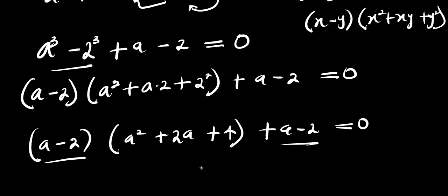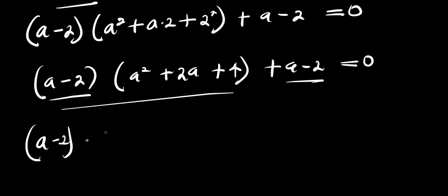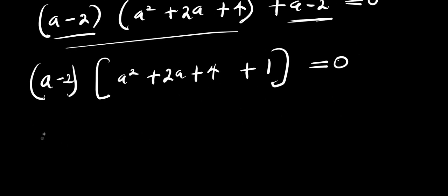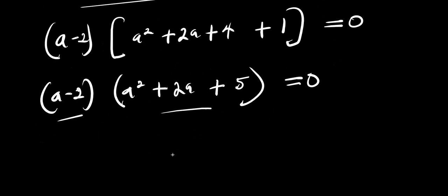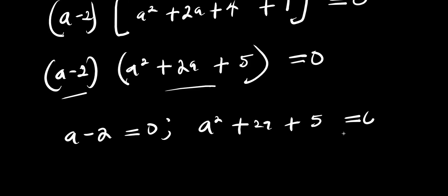We have a minus 2 as a common factor. Factoring this out gives us a minus 2 times a squared plus 2a plus 5, equals 0.